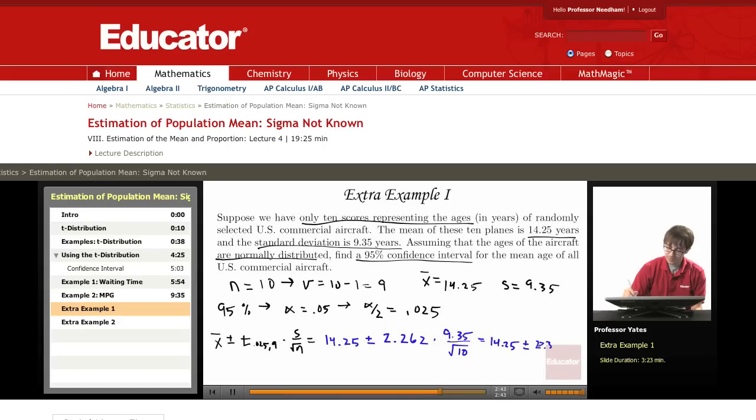Yikes, looking at the wrong one, we have 6.6881. So now I subtract that from the mean and add it to the mean, and we get a confidence interval of 7.619 and 20.9381.